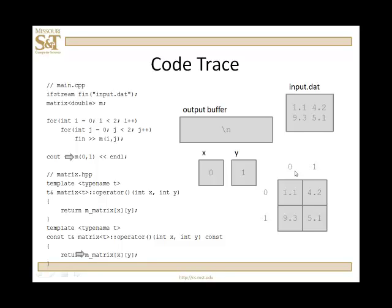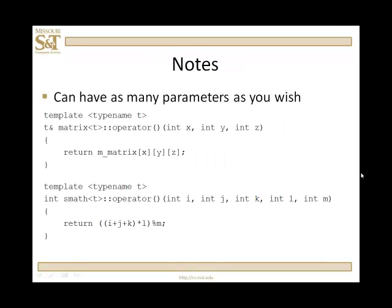I find the (0,1)th element of the matrix, which is 4.2, and return that. That's put into the output buffer. When the buffer is flushed and output is sent to the output device, I get 4.2 and a new line. That's the end of that code.